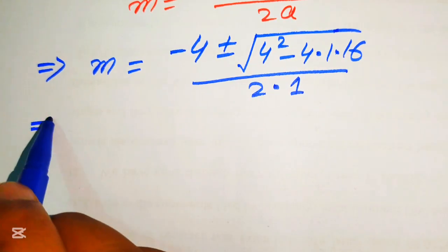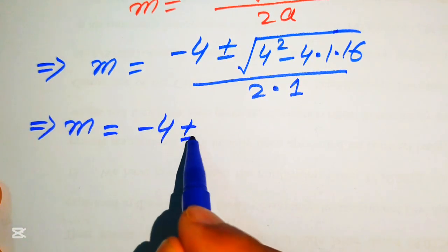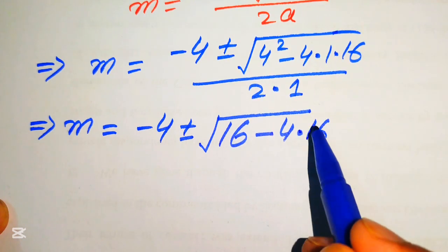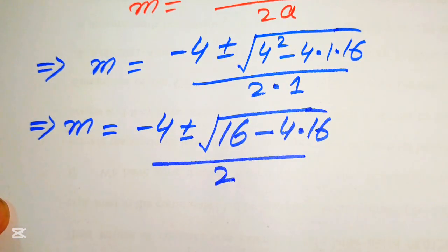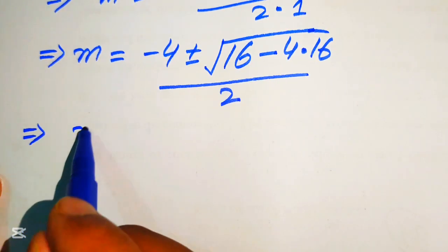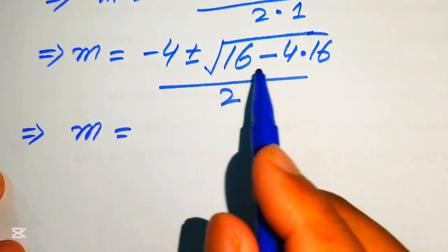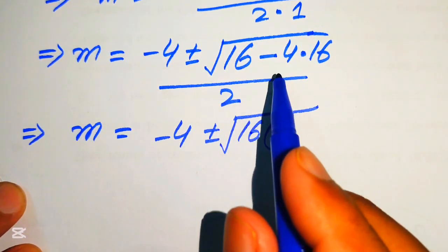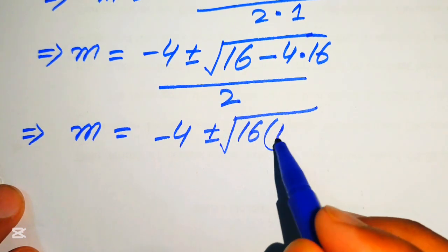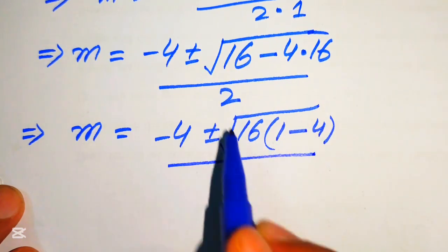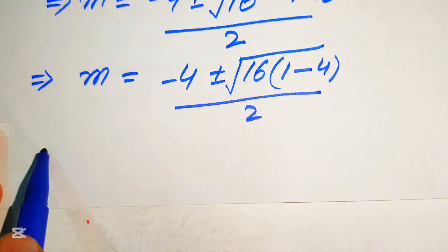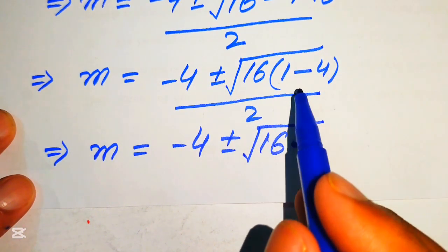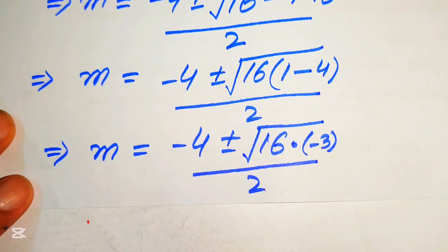Substituting the values, we get m equals minus 4 plus or minus the square root of (4 squared minus 4 times 1 times 16) divided by 2 times 1. Simplifying inside the radical: 4 squared equals 16 and 4 times 16 equals 64, giving us 16 minus 64 equals minus 48, divided by 2. We then factor out 16 inside the square root, leaving square root of 16 times (1 minus 4), which is square root of 16 times minus 3.